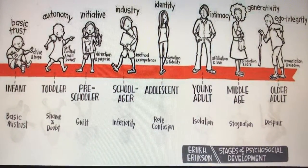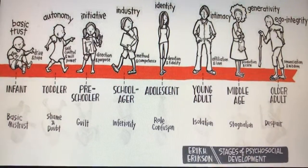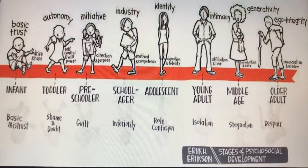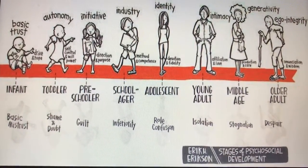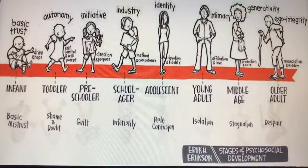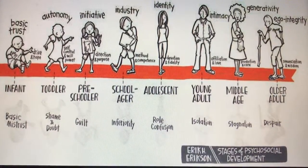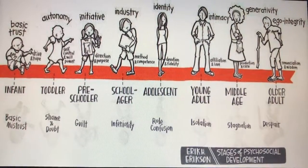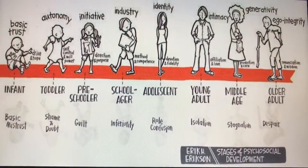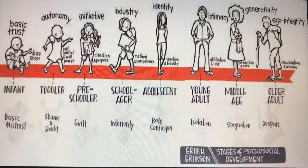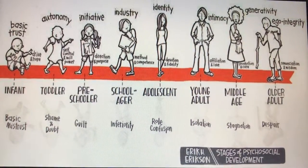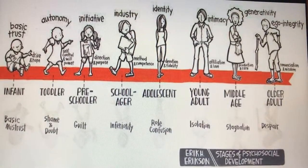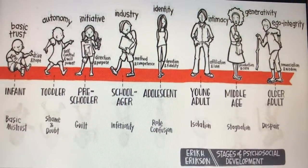The fifth stage is identity versus role confusion, which is between the ages of 12 to 20 years old, considered to be adolescence. This is where they develop a sense of self in relationship to others and to their own internal thoughts and desires. It's a devotion and fidelity resolution.